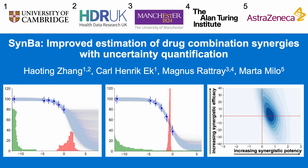To approach this challenge, we propose SIMBA, a flexible Bayesian approach to estimate the uncertainty of the synergistic efficacy and potency of drug combinations in a robust and calibrated fashion. This can be used to design an effective decision-making system for ranking and prioritizing drug combinations.